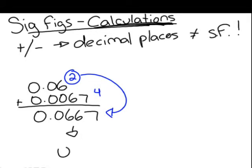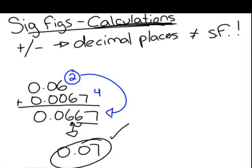We will round up to 0.07, because, obviously, your third decimal place is greater than or equal to five. So, we round up.